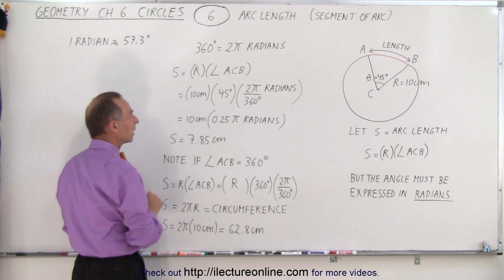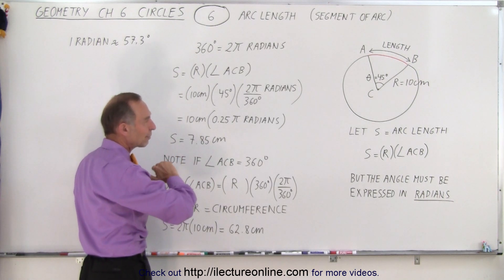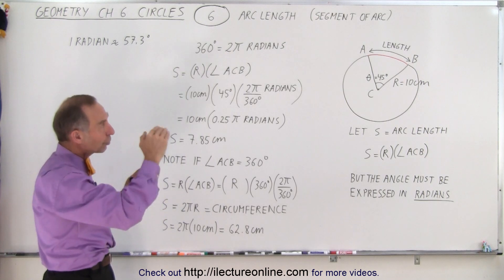When we work it out, it'll be 7.85 centimeters. So that's how we find the length of an arc on the circle.